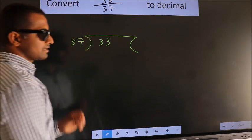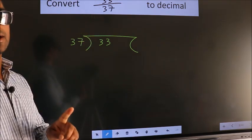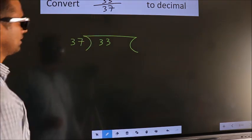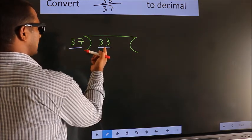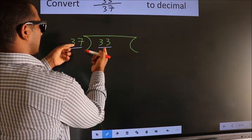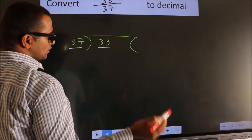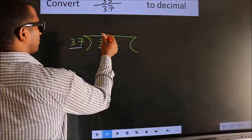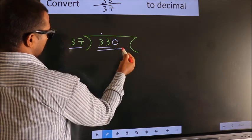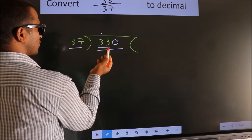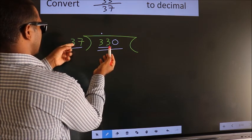This is your step 1. Next, we have 33 here, 37. 33 is smaller than 37, so what we should do is put a dot here and take 0 here, so 330.